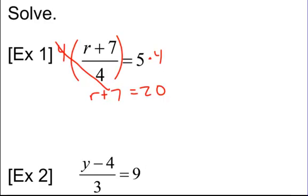And now it's actually a pretty simple equation. I can do minus 7, minus 7. So r would equal 13. Again, the whole thing was being divided by 4, so I had to multiply the whole thing by 4 to get rid of that divided by 4. Try number 2 on your own.